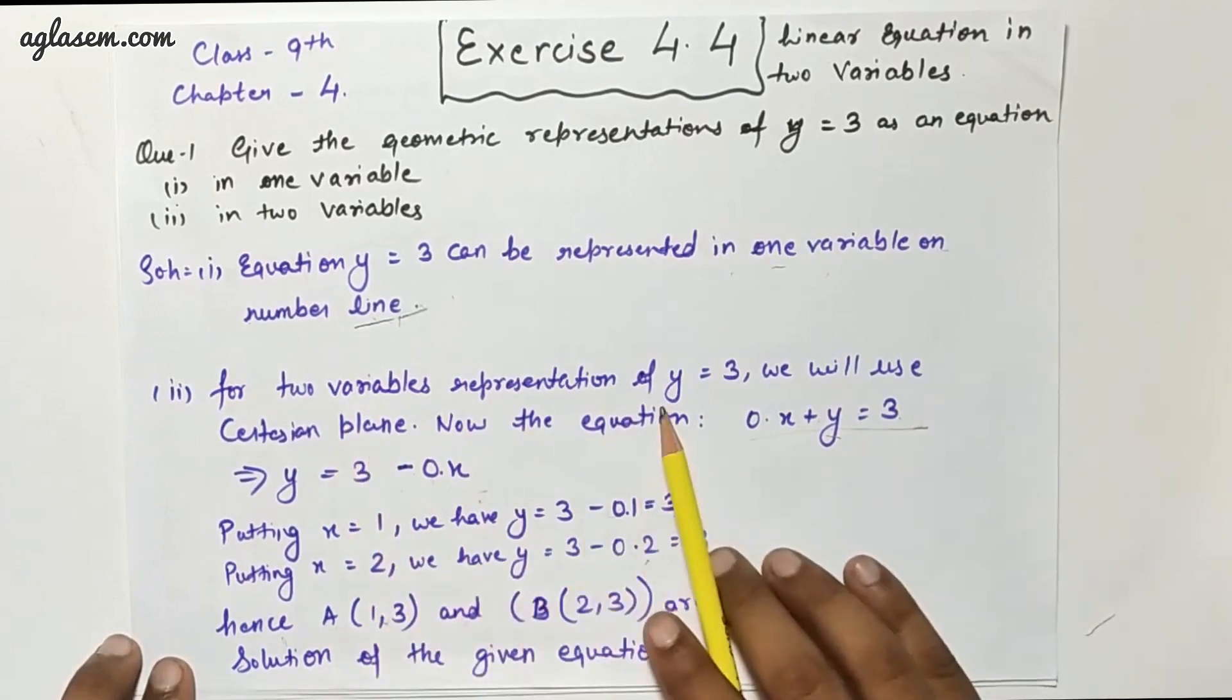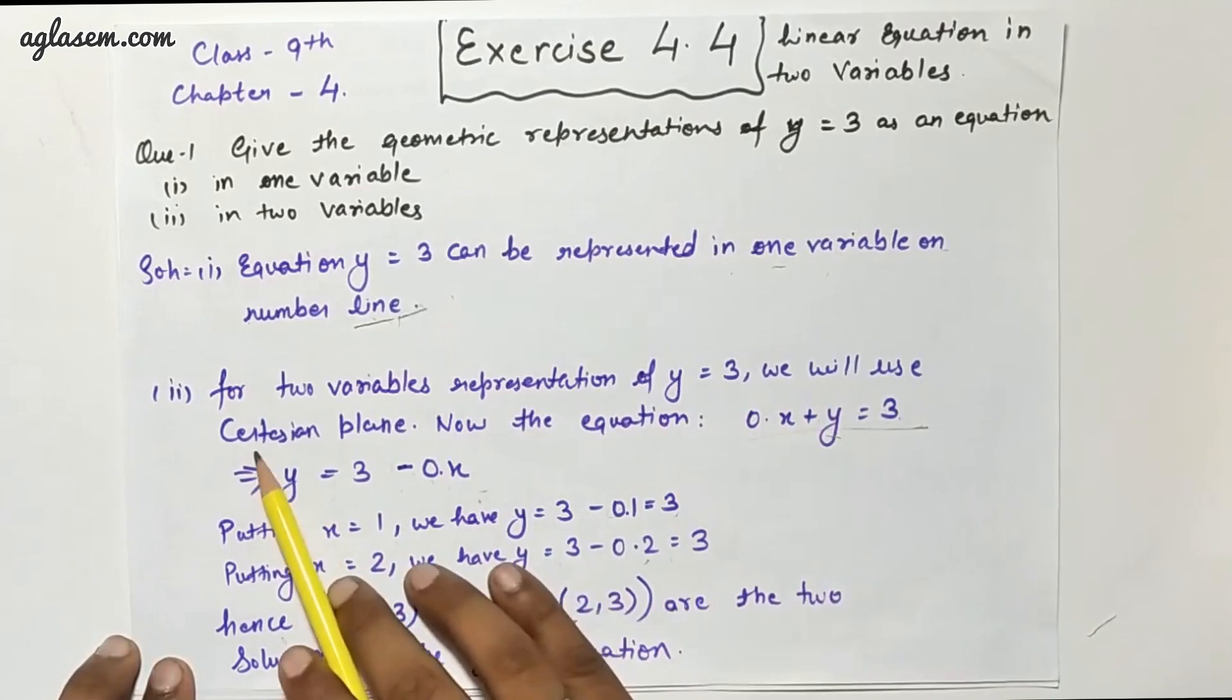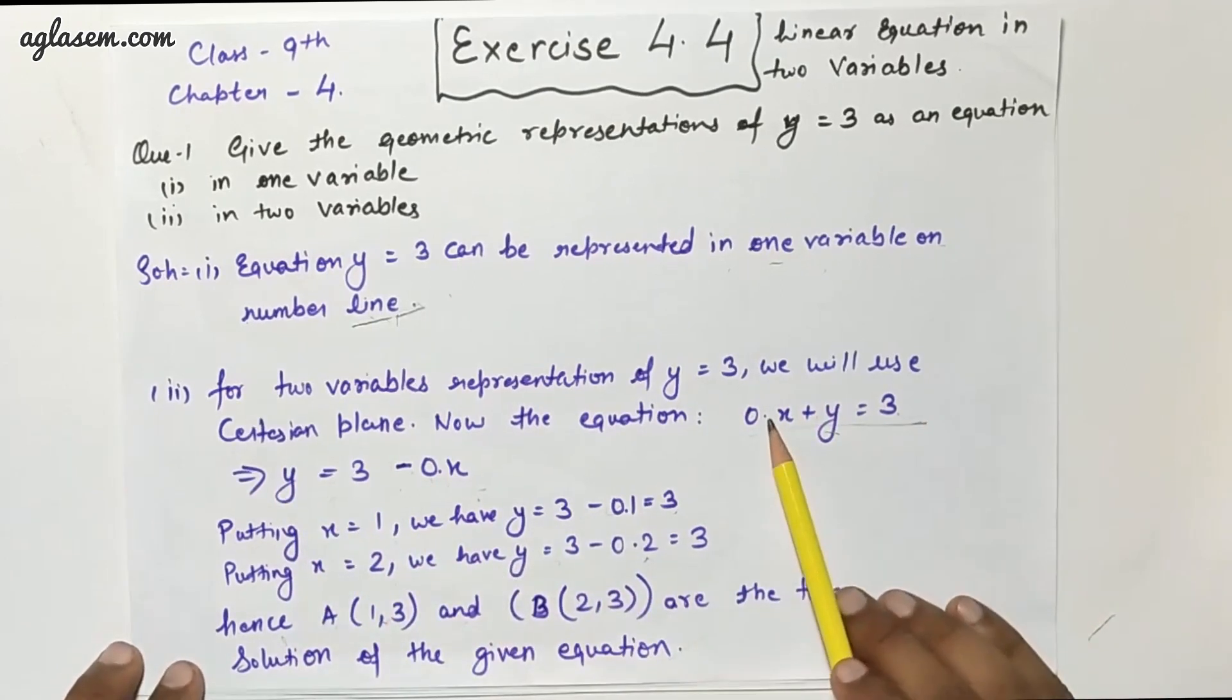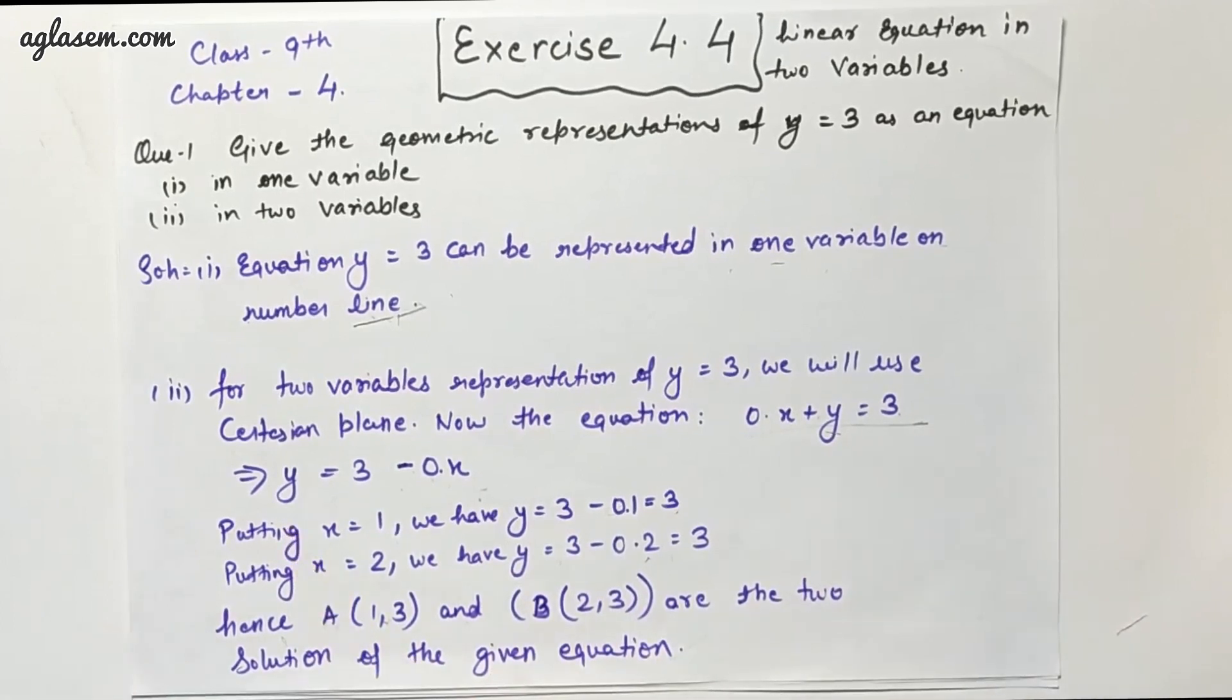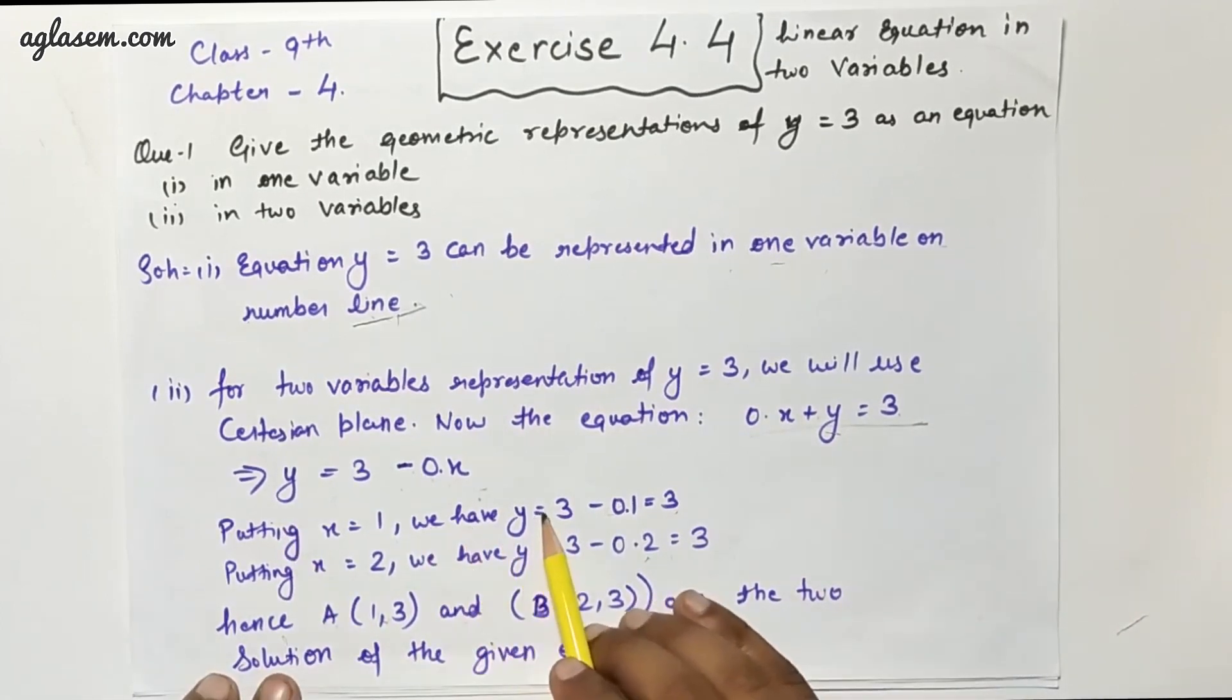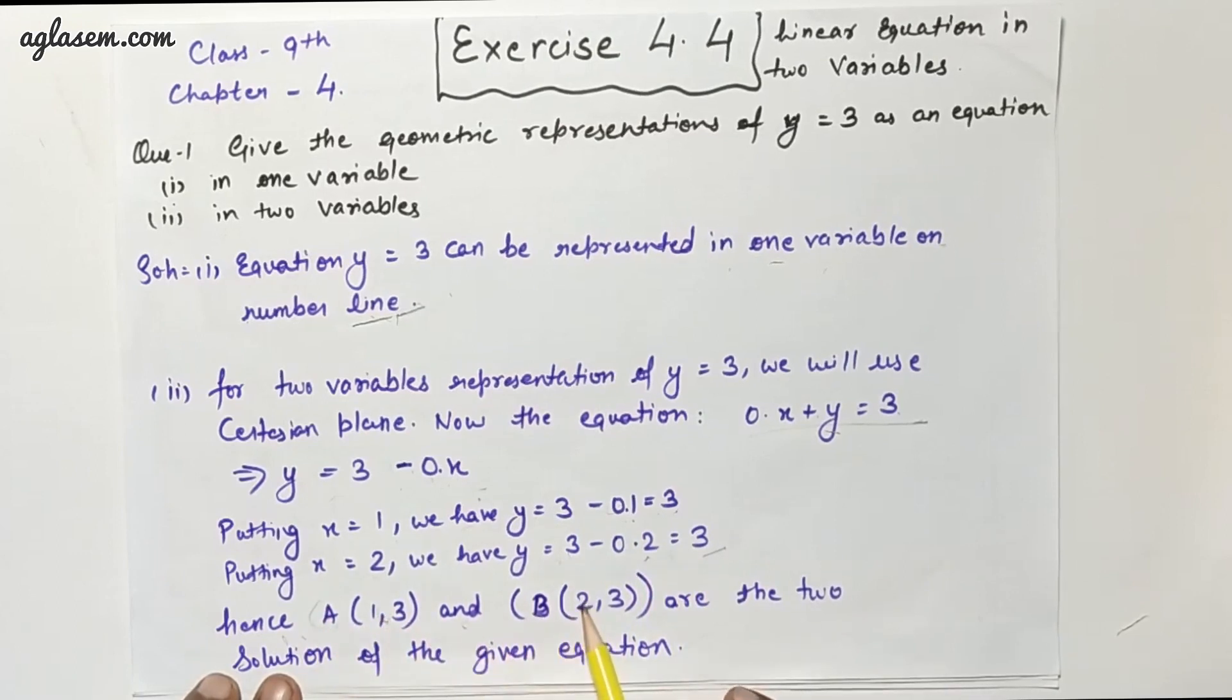For two variable representation of y equals 3, we will use the Cartesian plane. Now the equation will be 0x plus y equals 3. Putting x equals 1, we have y equals 3 minus 0 times 1, which equals 3. Putting x equals 2, we have y equals 3 minus 0 times 2, which equals 3. Hence A is (1, 3) and B is (2, 3), and these are the two solutions of the given equation.